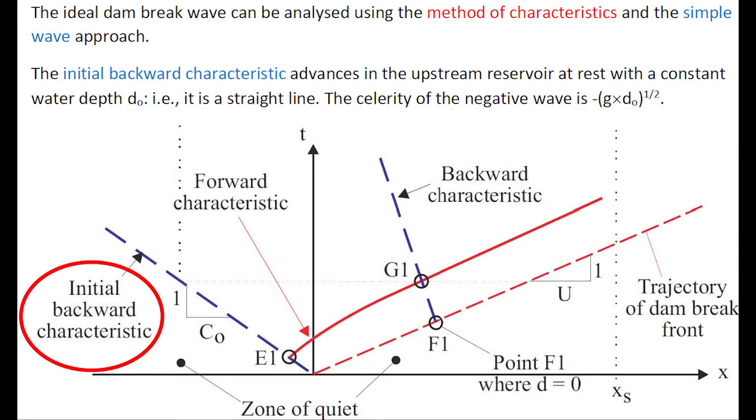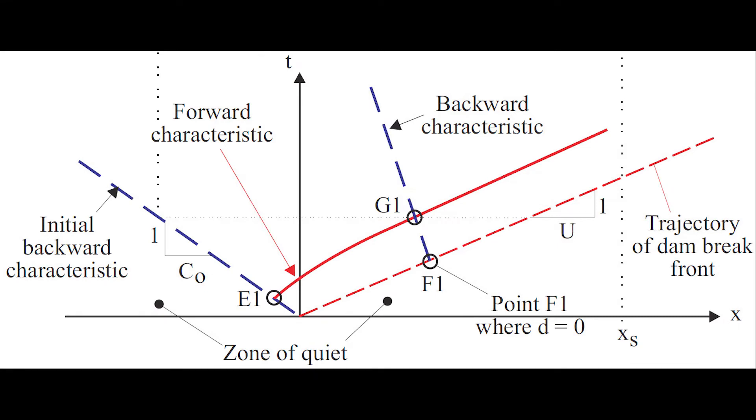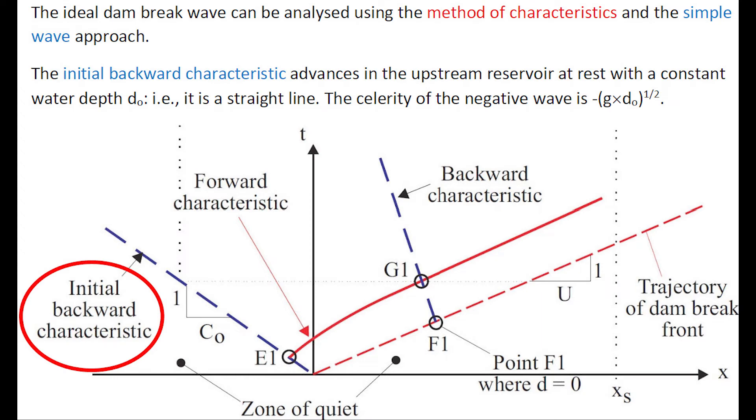The ideal dam-break wave can be analyzed using the method of characteristics or the simple wave approach. The initial backward characteristic advanced in the upstream reservoir are traced with a constant water depth. It is a straight line, and the celerity of the negative wave is minus square root of G times D-not, with D-not the initial reservoir depth.